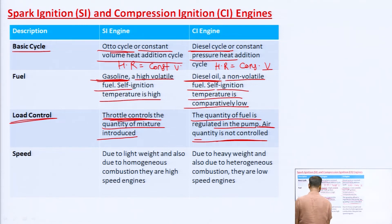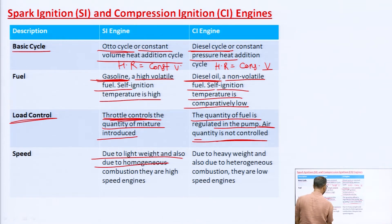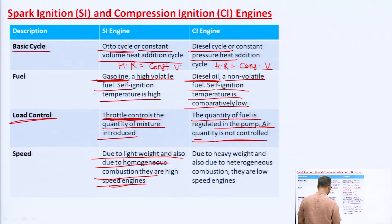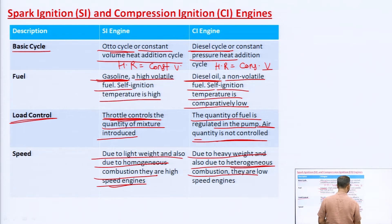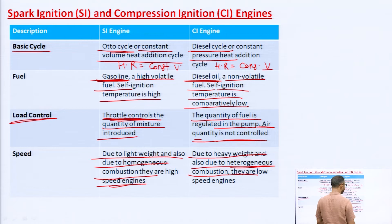Regarding engine speed: due to light weight and also due to homogeneous combustion, SI engines are high-speed engines. The air-fuel mixture combustion in the SI engine is homogeneous and the engines are lighter, which makes them high-speed. In contrast, due to heavy weight and also due to heterogeneous combustion, CI engines are low-speed engines. The combustion of fuel with air in CI engines is heterogeneous, making them low-speed.